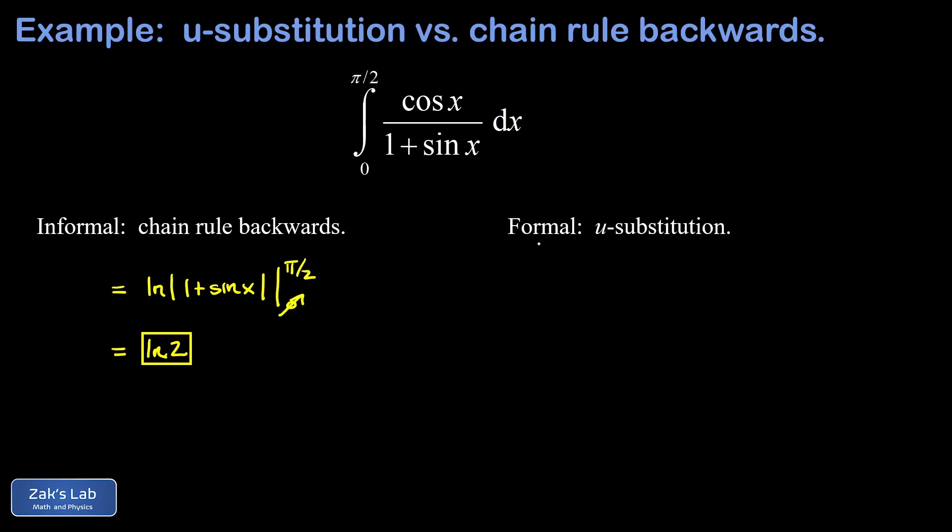Now to do a formal u substitution on this, you still have to recognize that you have the derivative of the denominator sitting in the numerator. That's what makes the u substitution a promising method for the integral. I'm going to take u equals 1 plus sine x, and I'm thinking, oh, the derivative of that is cosine, and I see that in the numerator. So I think everything's going to work here.